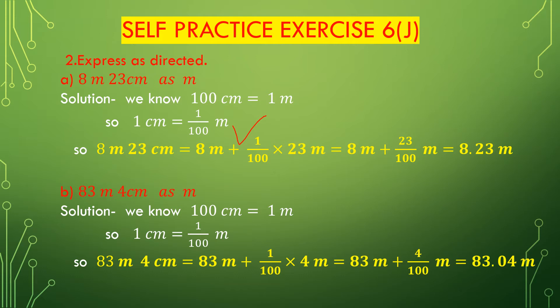8 meters 23 centimeters will be 8 meters plus we have to convert 23 centimeters to meters. 23 centimeters will be — since 1 centimeter is 1 divided by 100 meters — 23 centimeters will be 1 divided by 100 multiplied with 23 meters. So, 8 meters plus 1/100 × 23 meters equals 8 meters plus 23 divided by 100 meters.